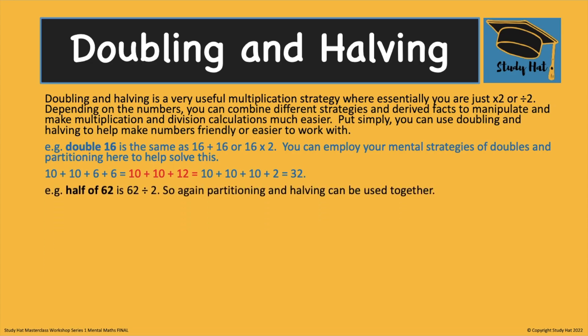In the same way if you're halving a number 62 for example again you can partition it 60 and 2, half the 60 half the 2 that's 30 and 1 giving you 31.